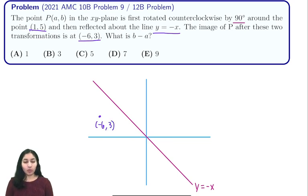Now we know that it was reflected over the line y equals negative x to get to this point, so all we have to do to find the point right before this is reflect about the line again. When we reflect about this line, we get (-3,6).